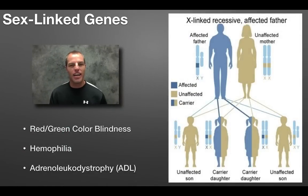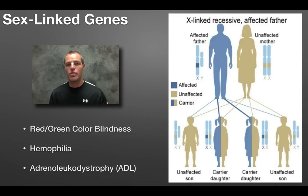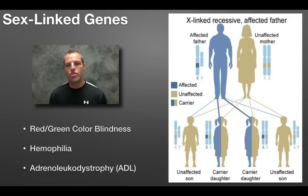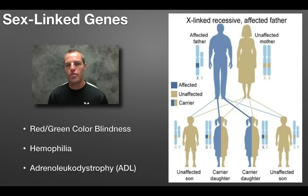A couple of common X-linked recessive diseases that men are more likely to get are red-green colorblindness and hemophilia, where your blood doesn't clot properly. Also ALD — there's actually a movie called Lorenzo's Oil about parents whose child had this condition. It's usually passed to a son from his mother because it's on the X chromosome and controlled by a recessive allele. The parents actually went out and found the cure for it. It's a really cool story — look it up.